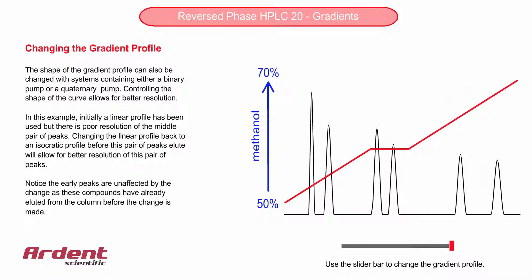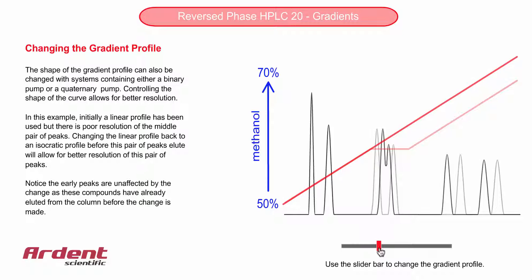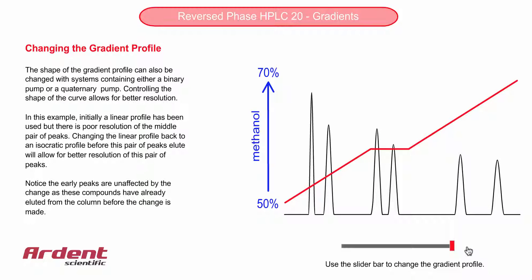Changing the rate of increase of the organic modifier will change both retention and selectivity, and hence will affect resolution. Use the slider bar now to change the gradient profile, and notice the change to both resolution in the middle part of the chromatogram, and also retention in the back half of the chromatogram.